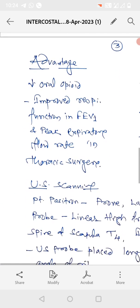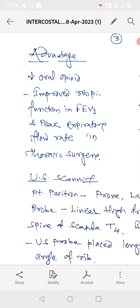What are the advantages? Intercostal nerve block decreases oral opioid requirement. It improves respiratory functions. It improves FEV1 and peak expiratory flow rate in thoracic surgery.